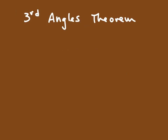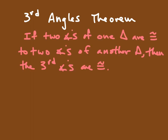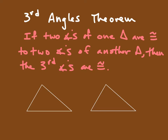The next theorem is called the third angles theorem. What it states is that if two angles of one triangle are congruent to two angles of another triangle, then the third angles are congruent. If we have two triangles and we know that these two angles are congruent and these two angles are congruent, then the conclusion we can draw is that the third angles are also congruent.